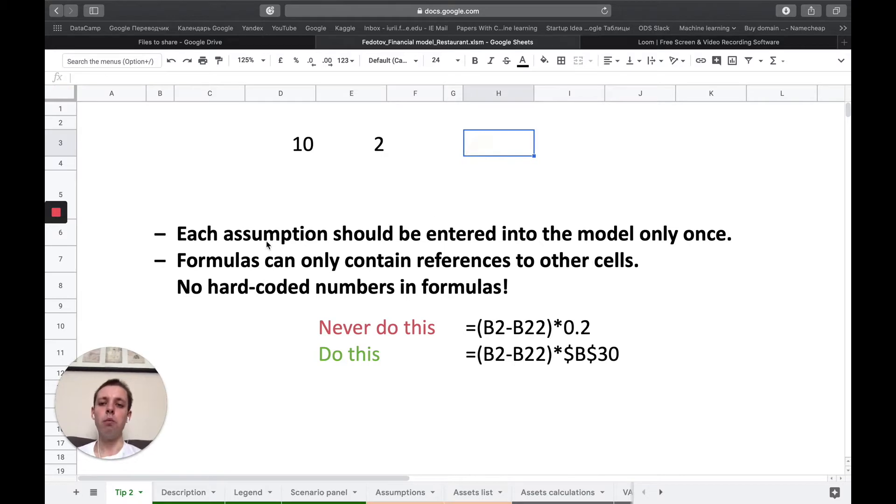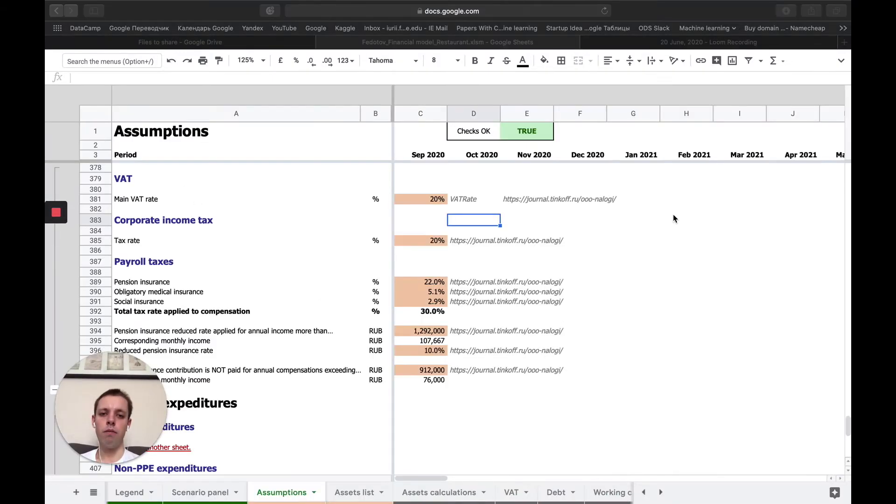There are two very important rules related to assumptions. The first one is that each assumption should be entered into the model only once. Let's see an example of applying this rule in practice.